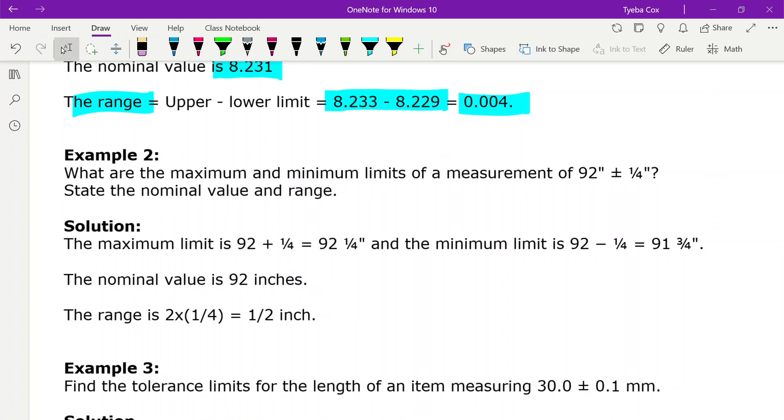Let's have a look at example two. What are the maximum and minimum limits of a measurement of 92 inches plus or minus a quarter of an inch? State the nominal value and the range.